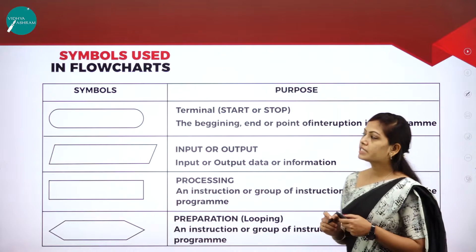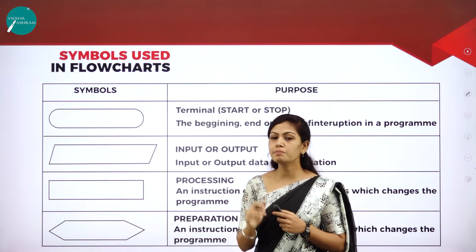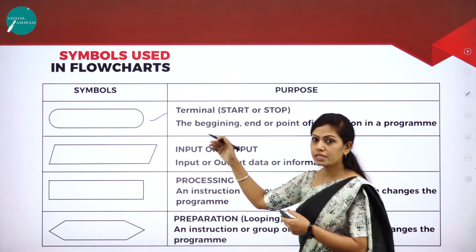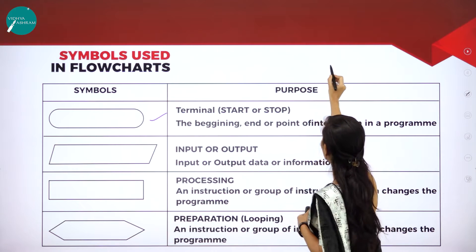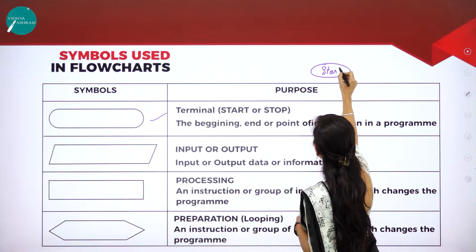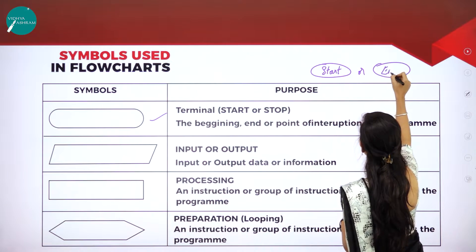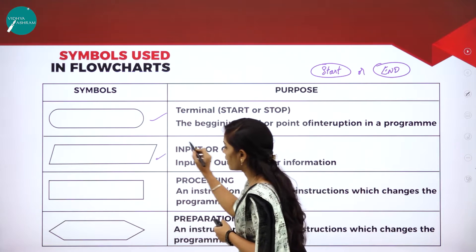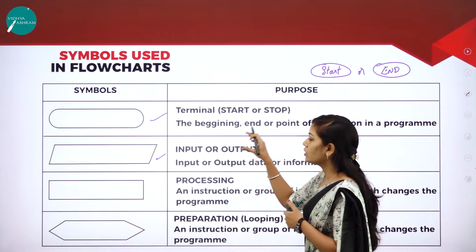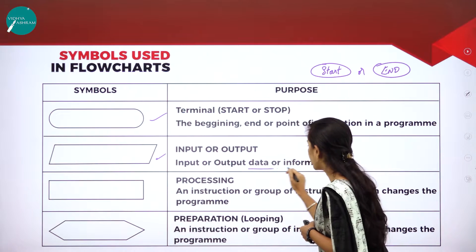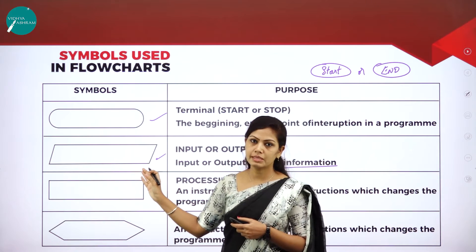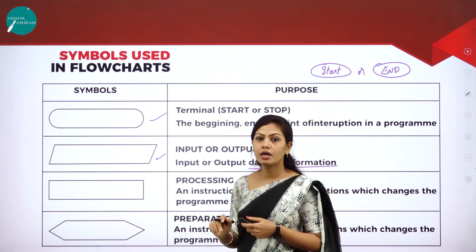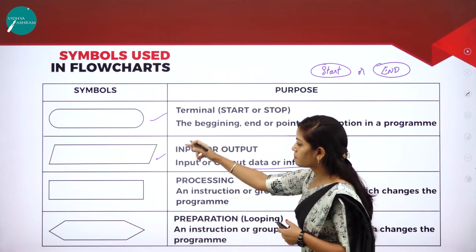The next concept is the symbols used in flowcharts. The first symbol is the oval, called the terminal — if you want to start or end a program, you use this oval shape. The next symbol is the parallelogram, used for representing input or output data or information.